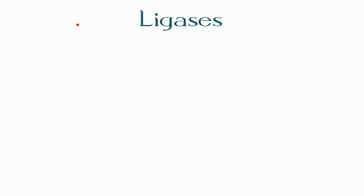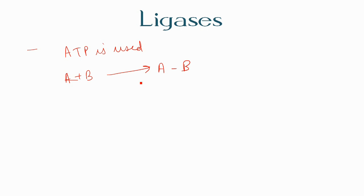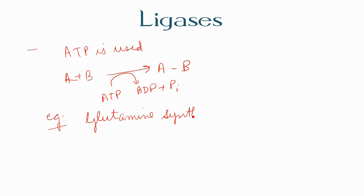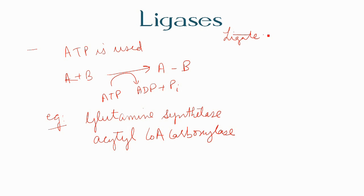The last category is ligases — enzymes catalyzing synthetic reactions where two molecules are joined together and ATP is used. The reaction: A + B → AB, where ATP is used. Examples include glutamine synthetase and acetyl-CoA carboxylase. Ligate means to bind, and therefore ligases bind two different molecules together.